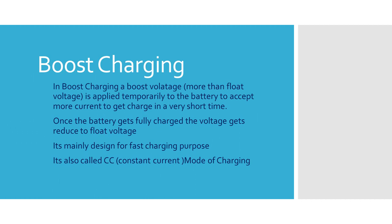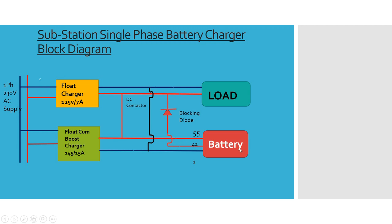Next we will discuss the working diagram. Here is a substation single-phase battery charger block diagram. Every substation has this battery charger — a float charger — and nowadays it comes as a float-come-boost charger. The rating of the float charger is 125 volts, 7 amps, and the float-come-boost charger is 145 volts, 15 amps. The single-phase supply is connected to both the float charger and the boost charger. As already mentioned, the float charger is connected in parallel with the load and battery.